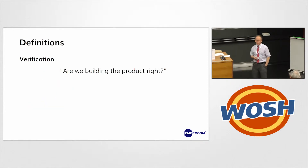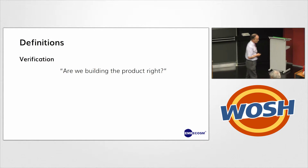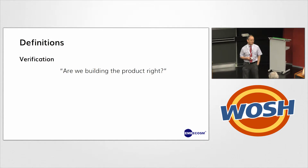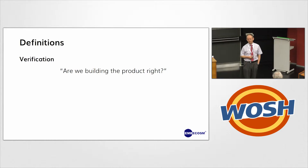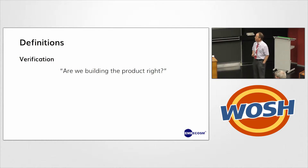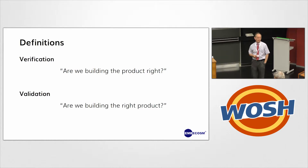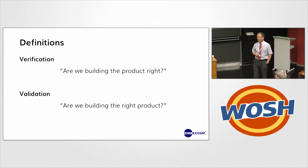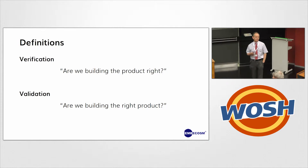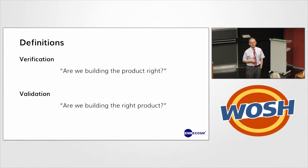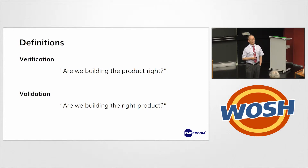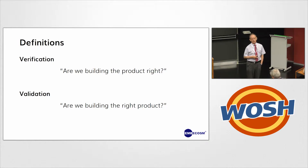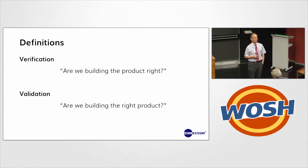This is a software engineer's definition. Verification is about asking: having defined our product, are we building it correctly? And by validation, we want to know if we're building the right product in the first place. You do have to do both. Most of what I'm talking today is about verification. But one of the advantages of doing things in models is you can actually decide before you make silicon if you're building the right silicon.